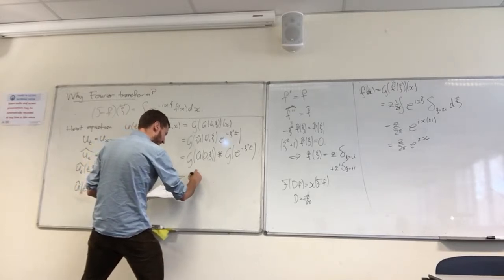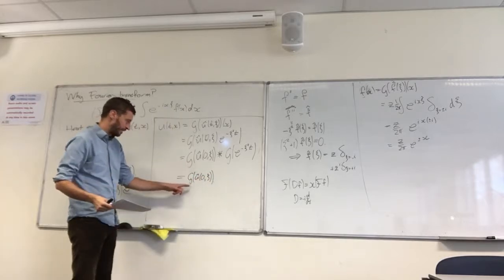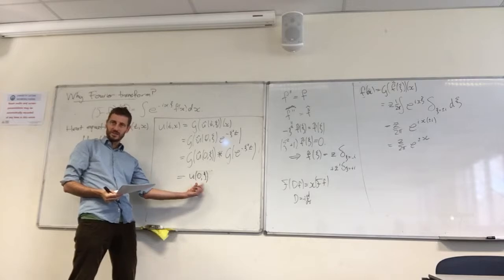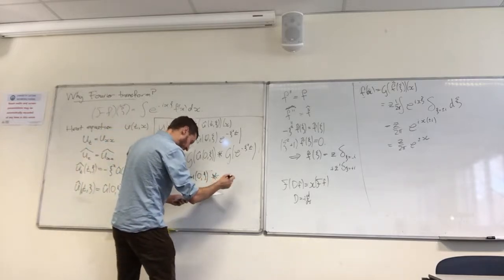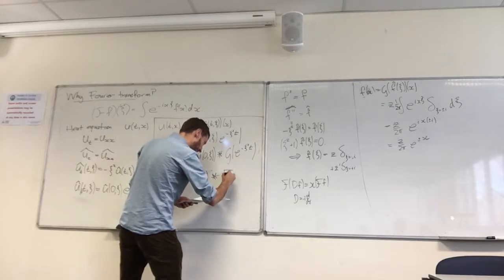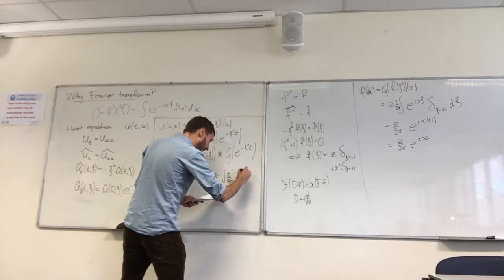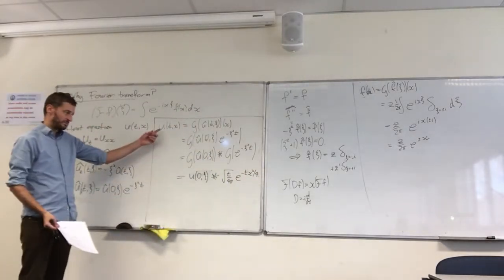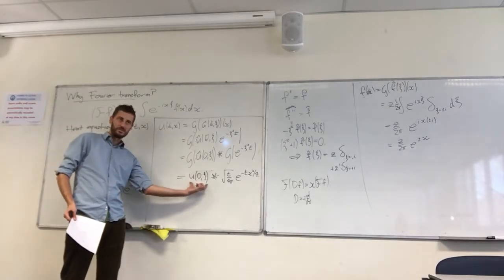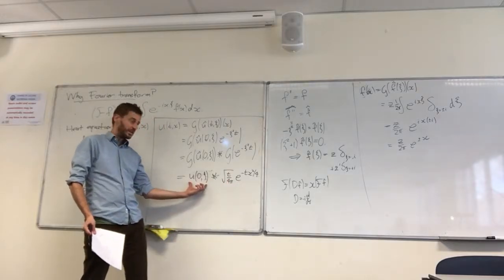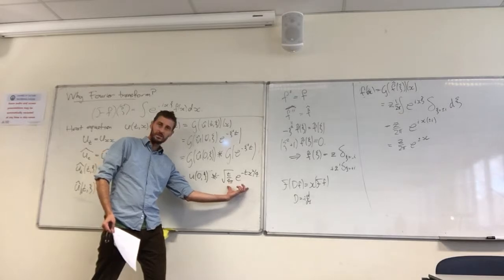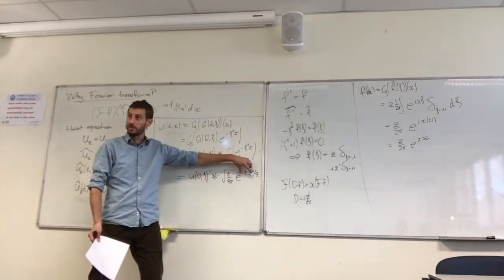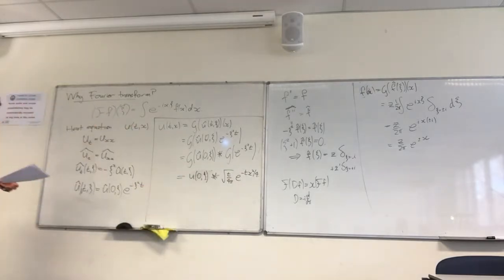So what we get here is û(0, ξ) — just the initial temperature distribution in our material at time 0 — convolved with a Gaussian. There are some funny constants that appear, and it turns out this basically completely tells you how to write down a solution. If you know the initial distribution of temperatures, to work out the temperature at time T you just convolve it with a Gaussian function whose amplitude grows as √T and whose width also grows with √T. That solves the heat equation for you. Fantastic.